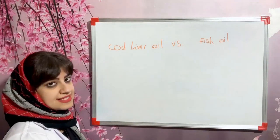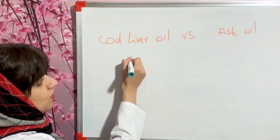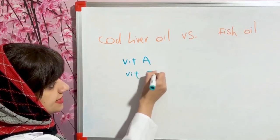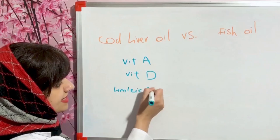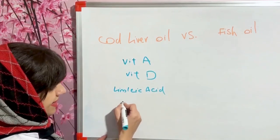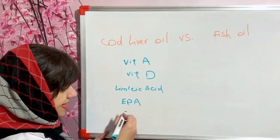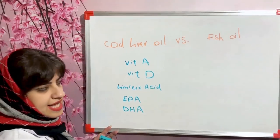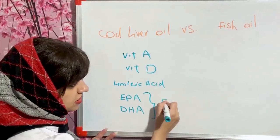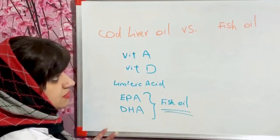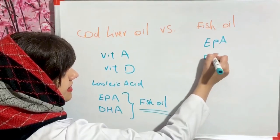Cod liver oil consists of vitamin A, vitamin D, essential fatty acids including linoleic acid, and other fatty acids including EPA — an abbreviation for icosapentaenoic acid — and DHA — an abbreviation for docosahexaenoic acid. These two, EPA and DHA, are what constitute fish oil. So fish oil contains EPA and DHA.